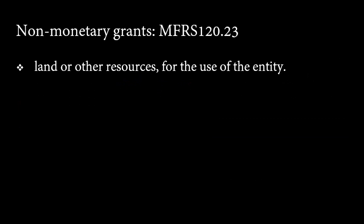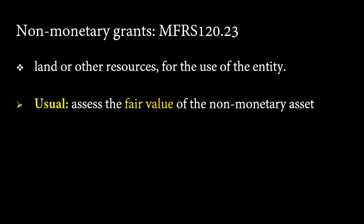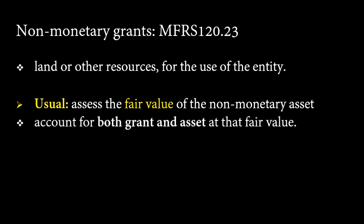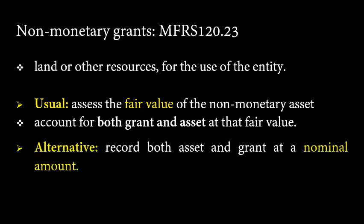A government grant may take the form of a transfer of a non-monetary asset such as land or other resources for the use of the entity. In circumstances like this, it is usual to assess the fair value of the non-monetary asset and to account for both the grant and the asset at that fair value. Alternatively, which is sometimes applied, is to record both the asset and the grant at its nominal amount.